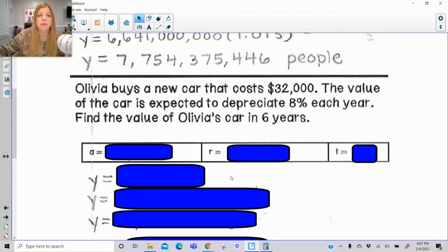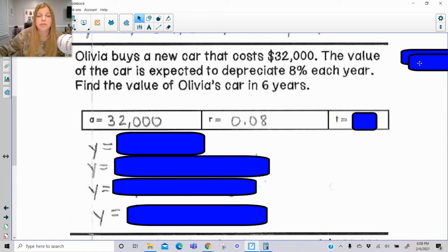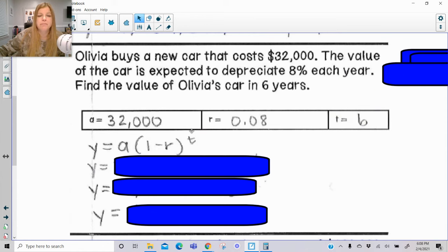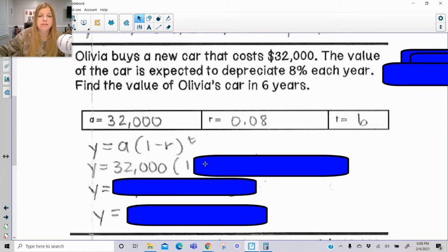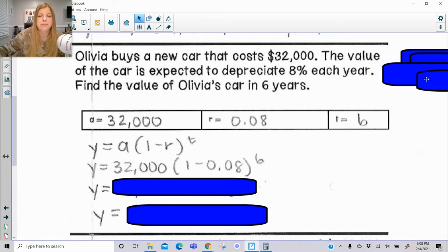Second depreciation problem, Olivia buys a new car that costs $32,000. The value of the car is expected to depreciate 8% each year. Find the value of Olivia's car in six years. Initial value is $32,000. My rate, so 8% as a decimal, remember, is 0.08 for six years. I have my formula. I substitute in my value, so $32,000 times 1 minus 0.08 to the sixth power.